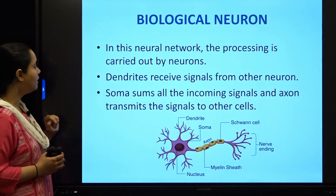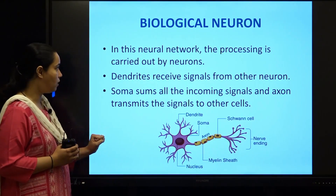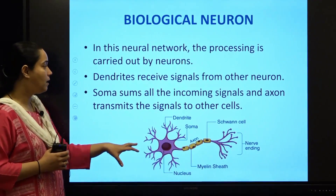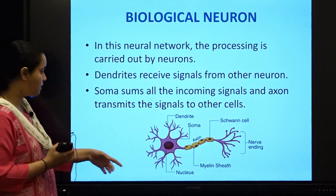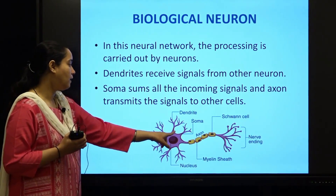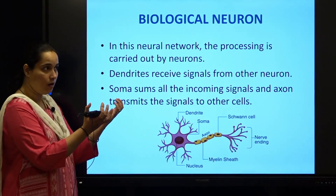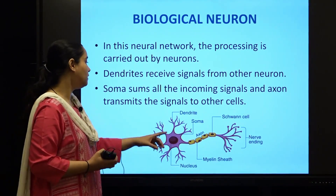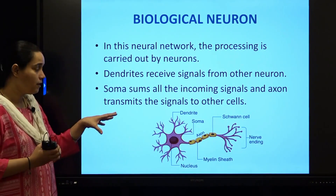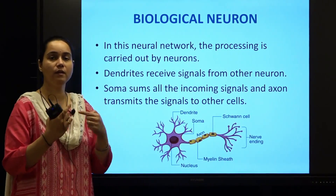In this particular biological neural network, the processing is carried out entirely through these neurons and their interconnections. The dendrites are the receivers of signals from other neurons. Once they receive the signals — and you can see there are so many dendrites — then there is the nucleus and the soma. Soma is going to sum all the incoming signals; it adds all the signals coming through the dendrites. Then it transmits that information to other cells using the axon, deciding which part of the body this information from the brain is going to.